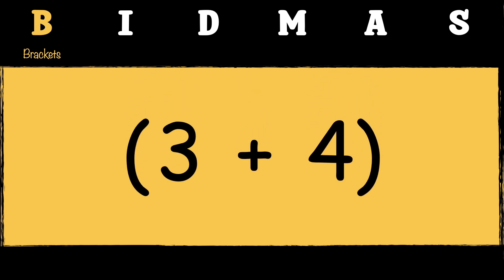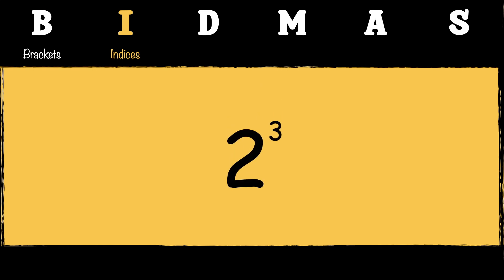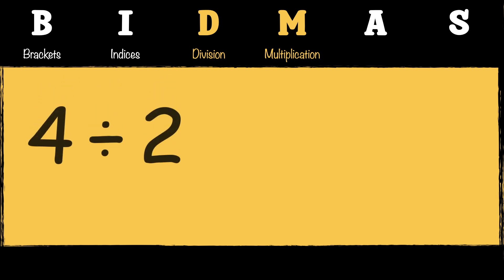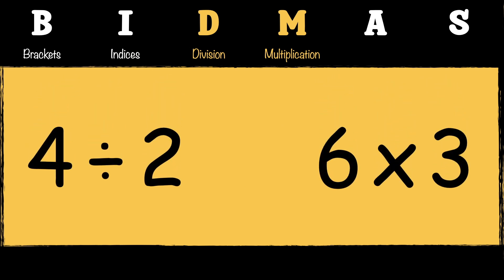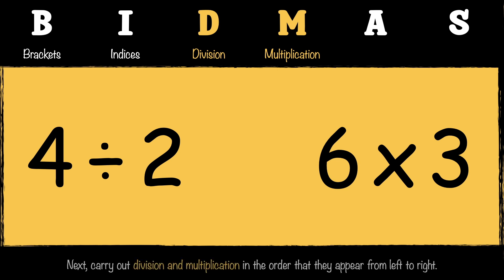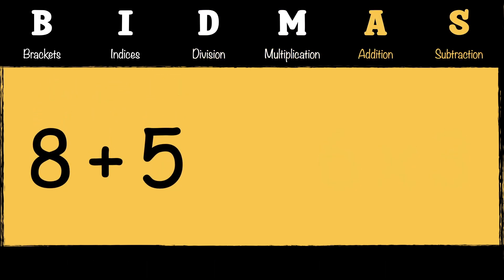The B stands for Brackets — this means we need to solve anything inside the brackets first. The I stands for Indices — after brackets we deal with indices, which can also be known as powers or exponents. The D stands for Division and the M stands for Multiplication, so we carry out division and multiplication in the order that they appear from left to right. The A stands for Addition and the S stands for Subtraction — we also perform addition and subtraction in the order they appear from left to right.